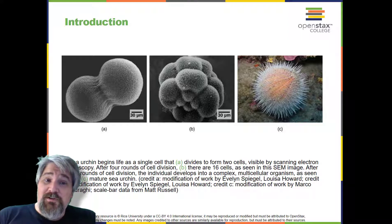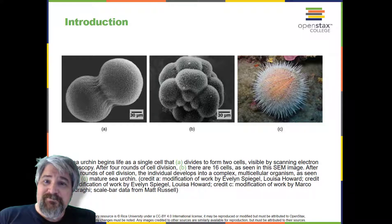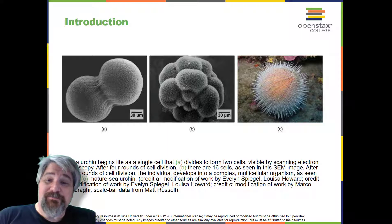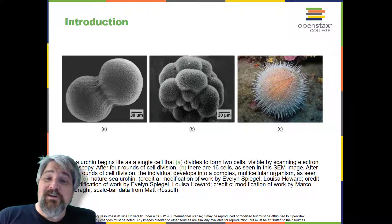For example, new blood and skin cells are constantly being produced. All multicellular organisms use cell division for growth, and in most cases, the maintenance and repair of cells and tissues. Single-celled organisms use cell division as their method of reproduction.